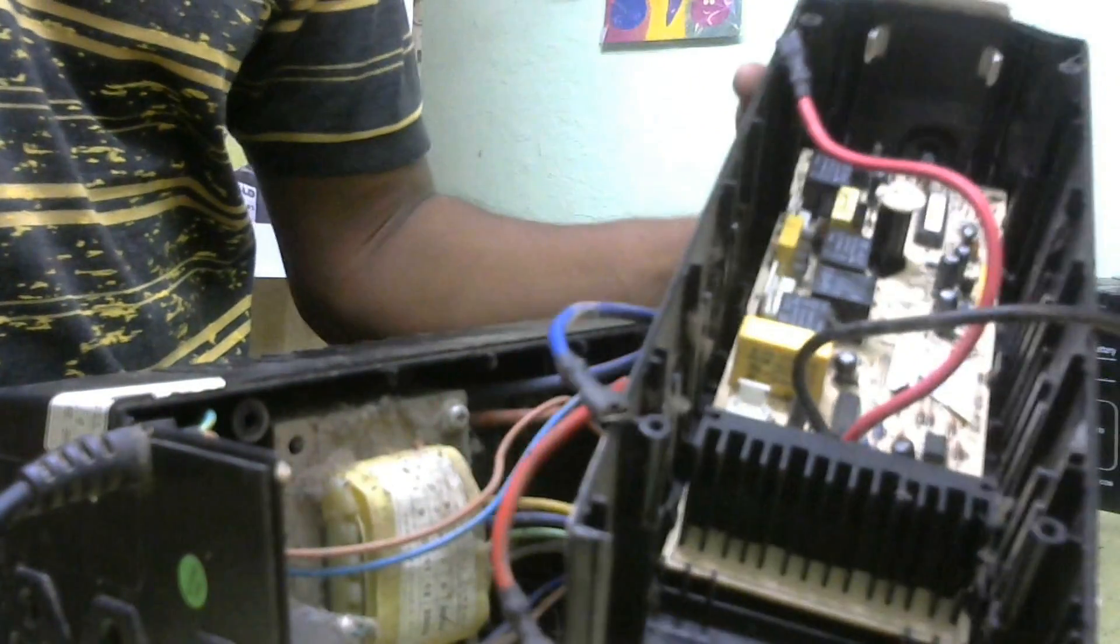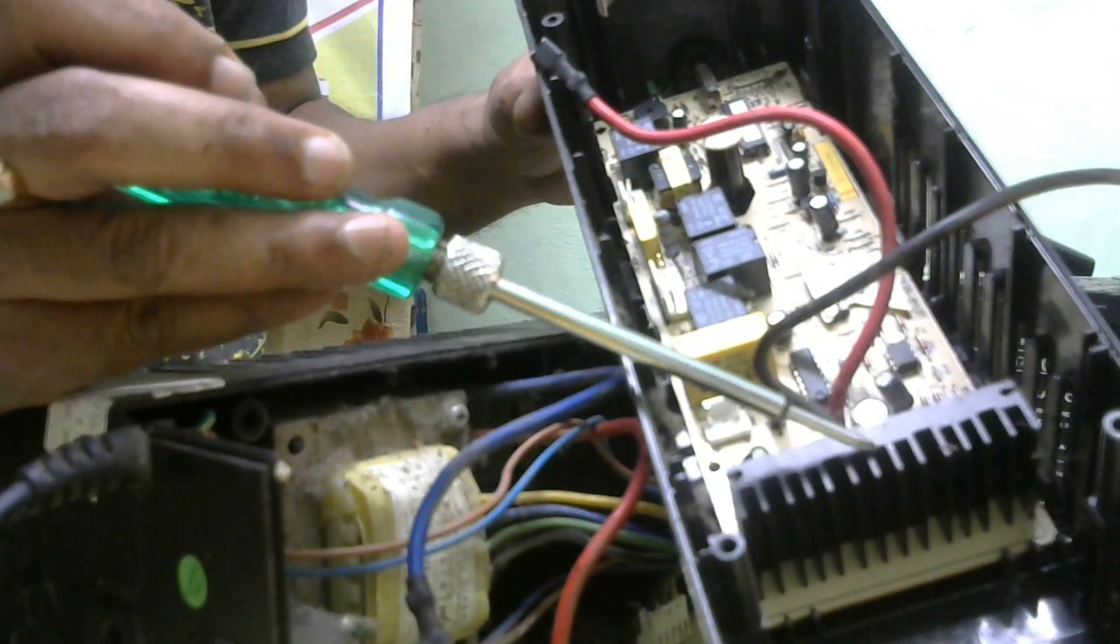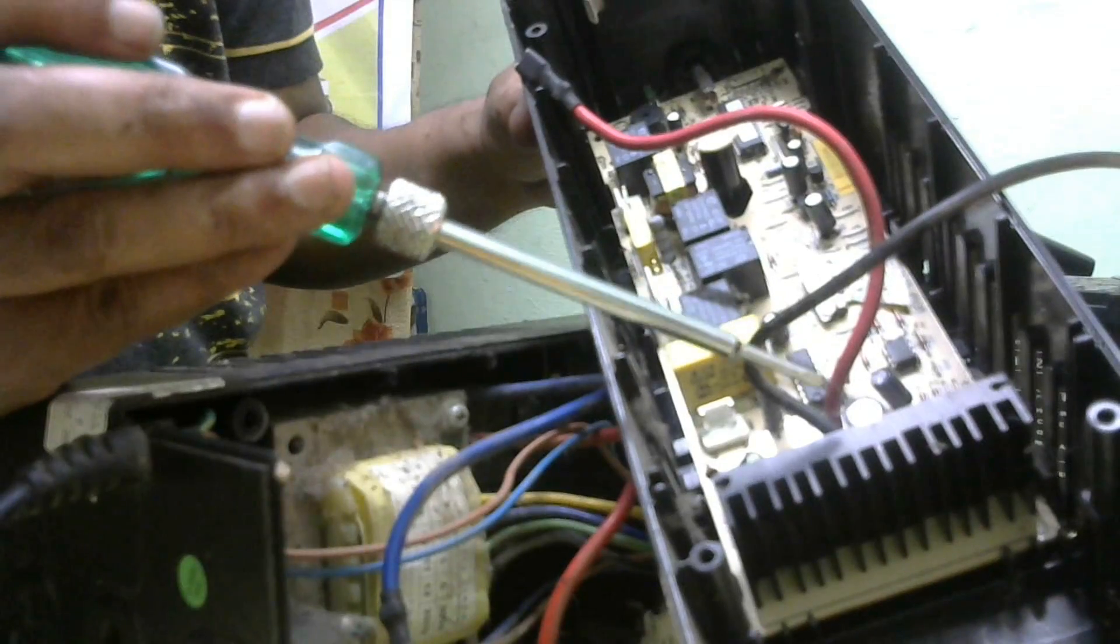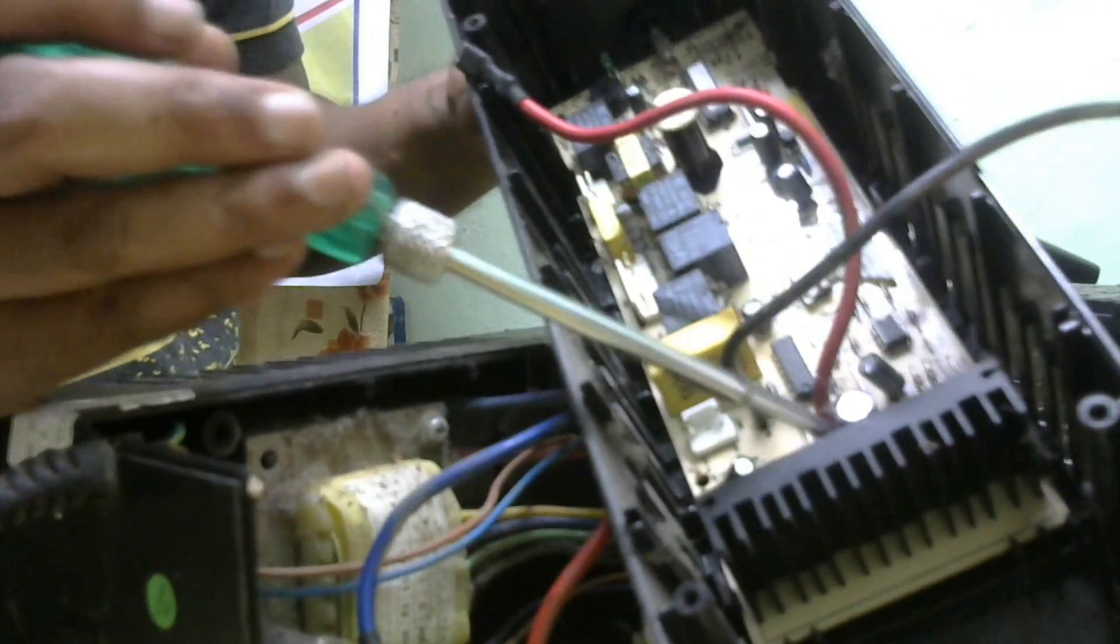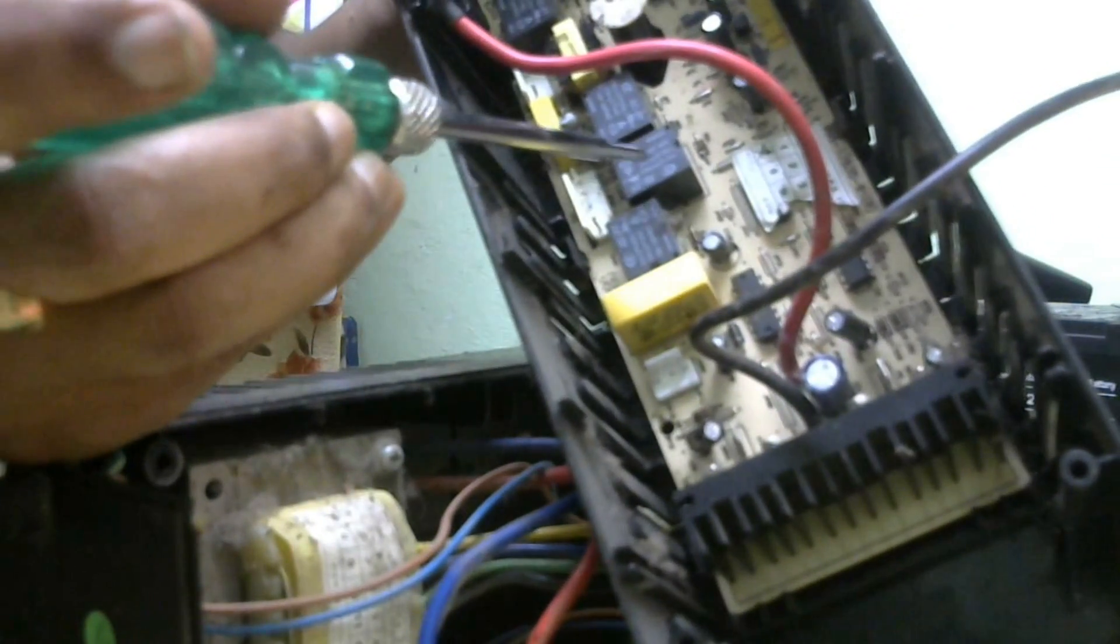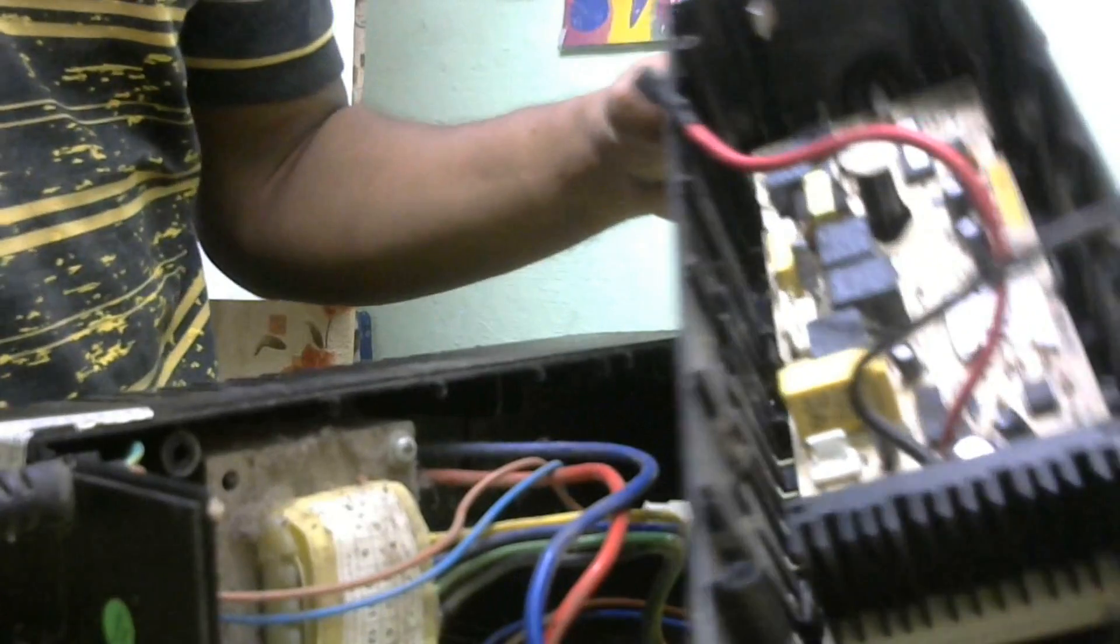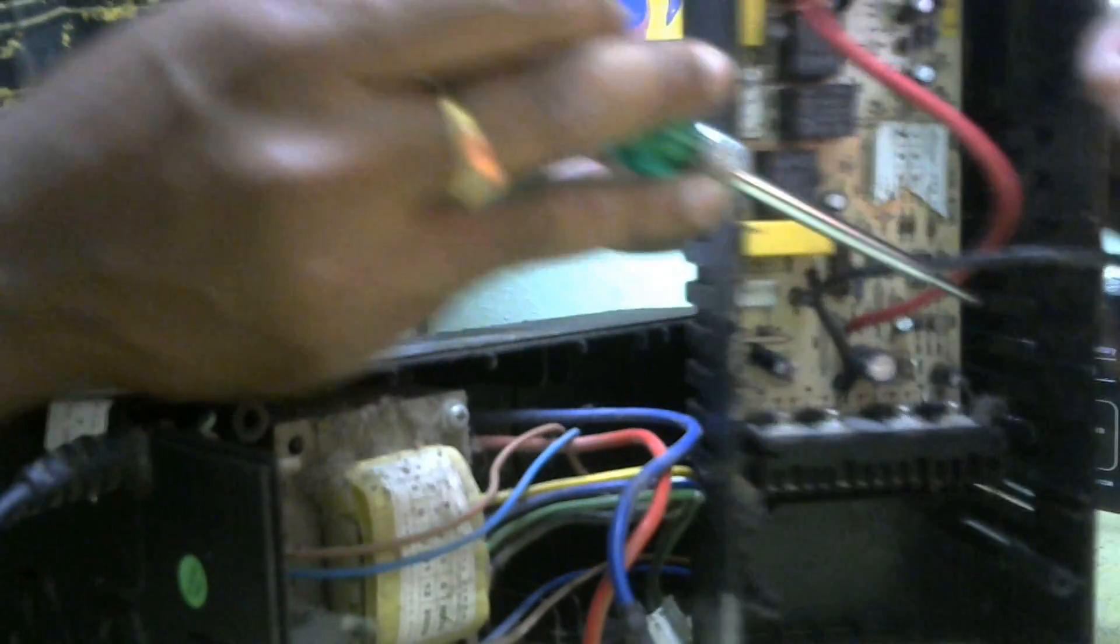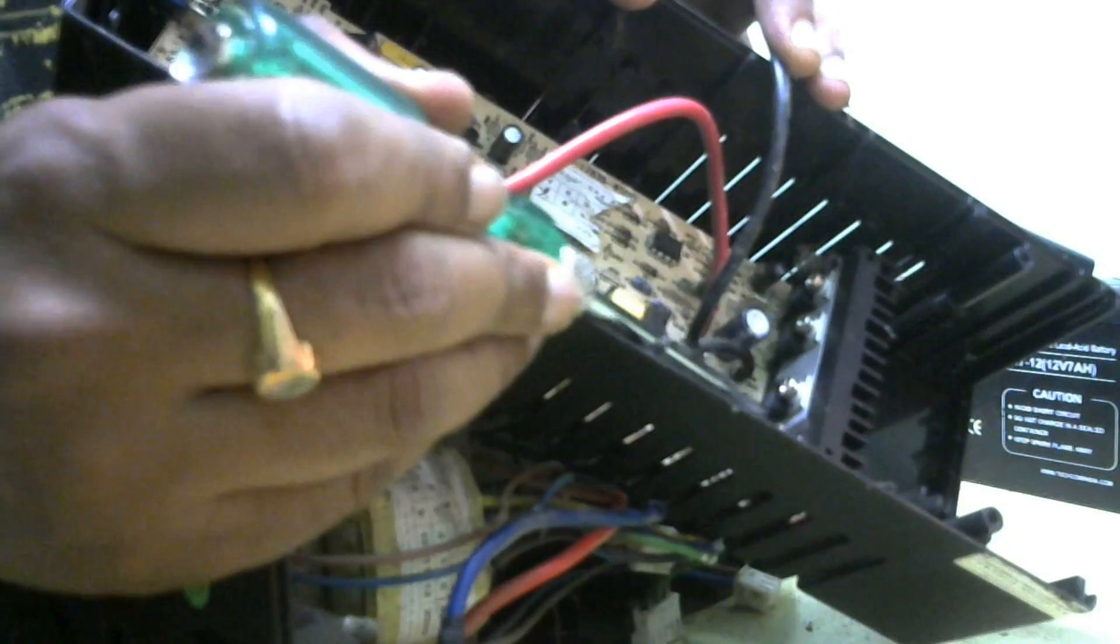This is the UPS inverter, converter, and charger - three circuits. First, the UPS charger charges the battery. Input is 230 volts, 50-60 hertz AC frequency single phase. These heat sinks convert that voltage into 12 volts. There are three smart relays - one, two, three, four. This is the functioning IC. These are capacitors for filter purposes. These regulator transistors regulate the voltage.